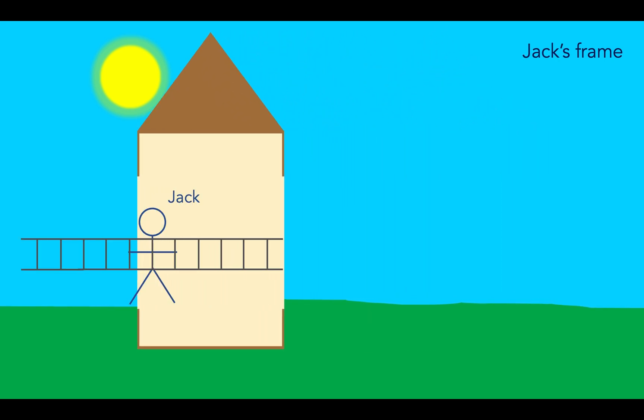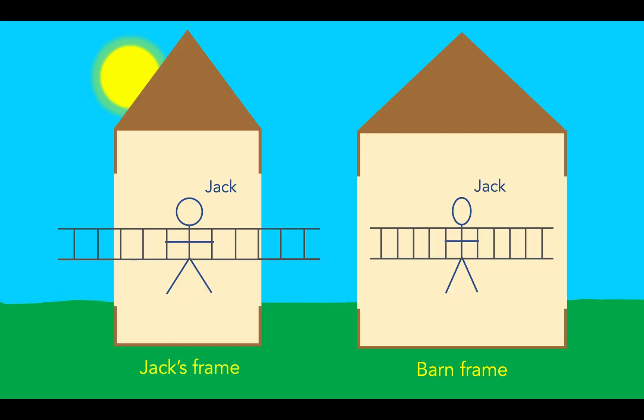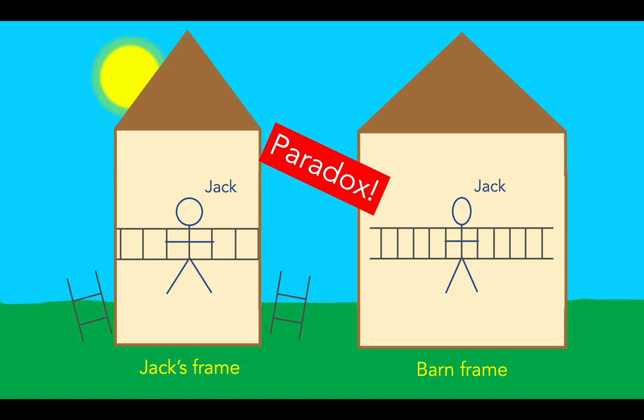So in Jack's reference frame, it is the barn that contracts. When the doors close, it's bad news for the ladder. In the barn frame, the ladder remains intact, whereas in Jack's frame, it gets cut. Well, it looks like we have a paradox on our hands.